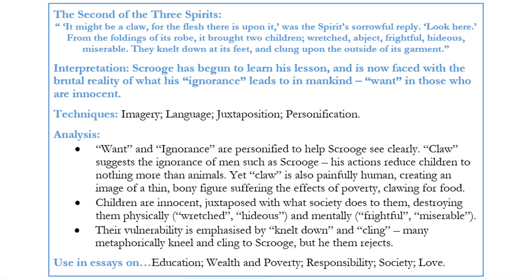In this quotation we focus on the fact Scrooge has begun to learn his lesson and is now faced with the brutal reality of what his ignorance leads to in mankind — want in those who are innocent. This quotation depicts a development in Scrooge's journey from ignorance to enlightenment. It is key that he himself asks about the children — he notices them for himself rather than having them shown to him. Scrooge uses questions earlier in the novel as a way to attack the charitable gentleman and reinforce his own views. Now he displays both humility and awareness of his own ignorance, stating, 'forgive me if I am not justified in what I ask.'